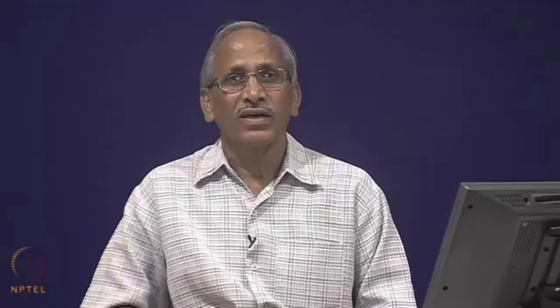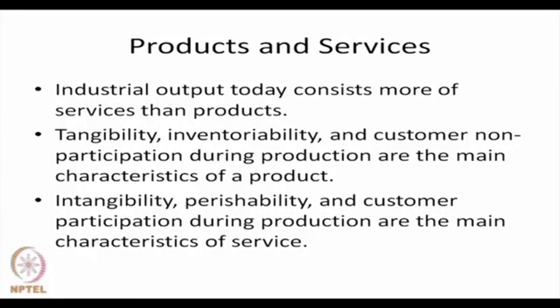Before we start, let us talk about products and services — basically these are output of any transformation system. Industrial output today consists more of services than products. There was a time when we used to call our society an agricultural society where the output was basically grains, rice, wheat and so on. Most of our population in the world was engaged in production of these outputs.